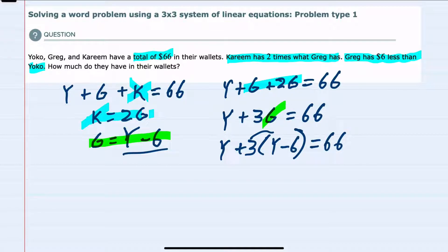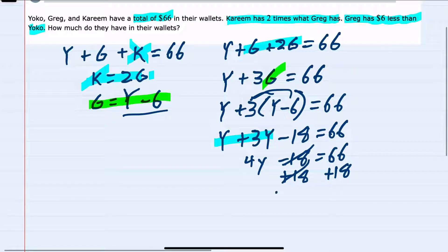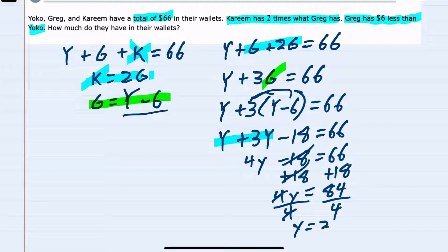We would have Y plus 3 times G, but we see that G is Y minus 6, equals 66. Solving here, we would start by distributing. So we would have Y, 3 times Y would be 3Y, 3 times minus 6 is minus 18, equals 66. Combining terms again: Y plus 3Y is 4Y. Isolating the Y, I would add the 18 to both sides. These would cancel, leaving me with 4Y equals 84. Dividing by 4 on both sides, Y equals 21.